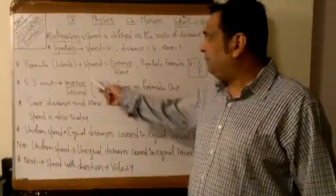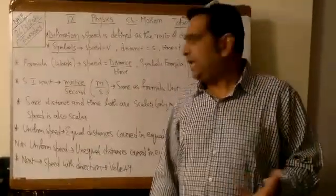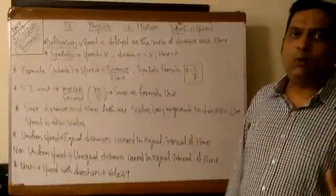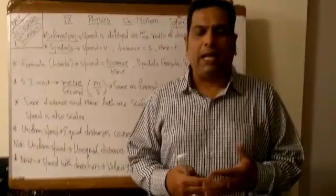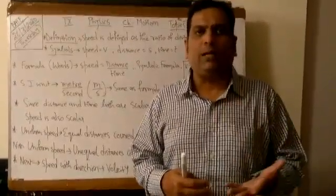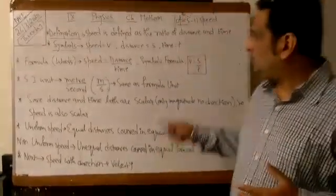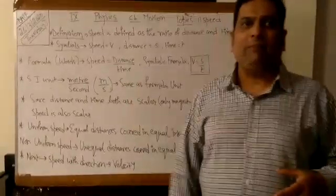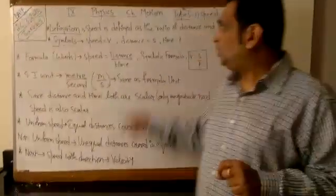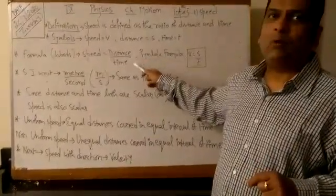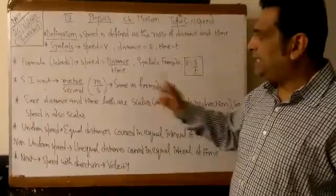Now, distance and time are both scalar quantities. A scalar quantity is one which has only a numeric value — only the magnitude. A vector quantity, in addition to magnitude, also has a direction. Since both distance and time are scalar, the ratio of scalar and scalar always gives a scalar quantity. So speed is basically a scalar quantity.